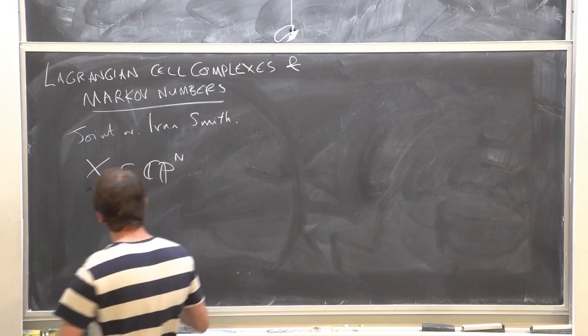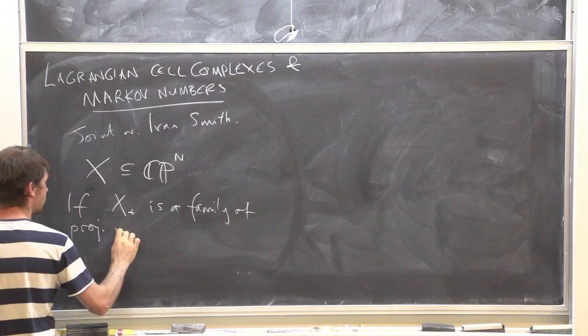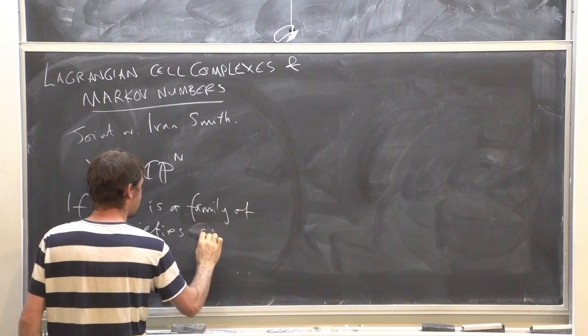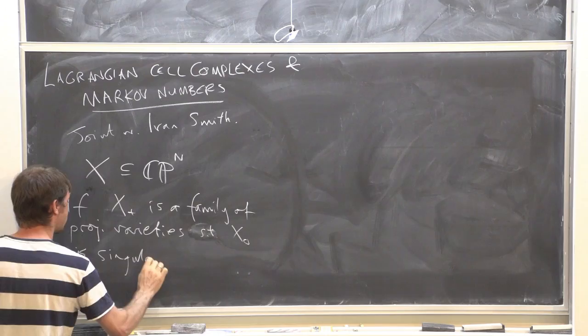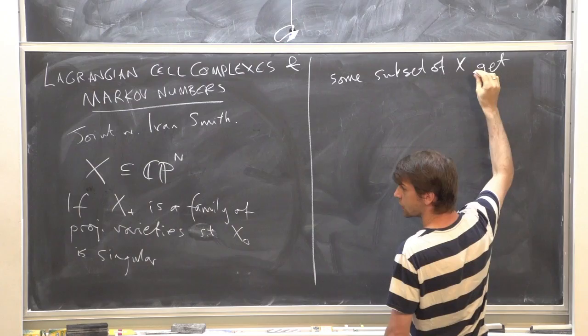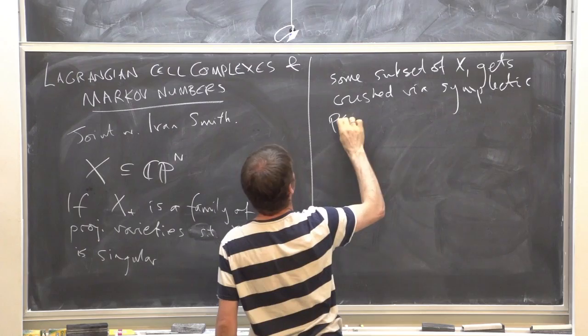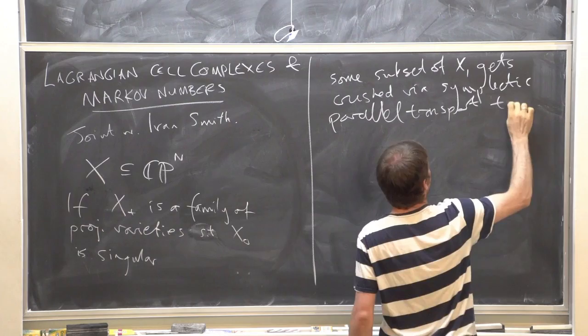Let me write something on the board. So F_t is a family of projected varieties such that X_0 is singular — some subset of X, say X_1, gets crushed by symplectic parallel transport to the singularity, and we call this the vanishing cycle.